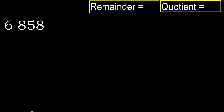858 divided by 6. 8 is not less, therefore start with 8. 6 multiplied by which number is nearest to 8 but not greater? 6 multiplied by 2 is 12 — 12 is greater. Multiplied by 1 is 6, 6 is not greater. Subtract: 8 minus 6 equals 2. Next.